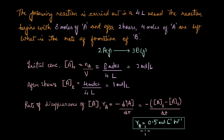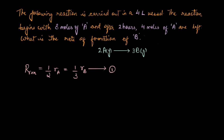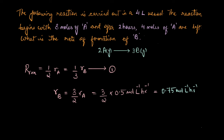Now that we have the rate of disappearance of A, how can we use R_A to find the rate of formation of B? From the reaction rate expression, reaction rate equals one-half times R_A equals one-third times R_B. From here, R_B equals three-halves times R_A. Substituting the value of R_A, we get R_B equal to 0.75 moles per liter per hour.